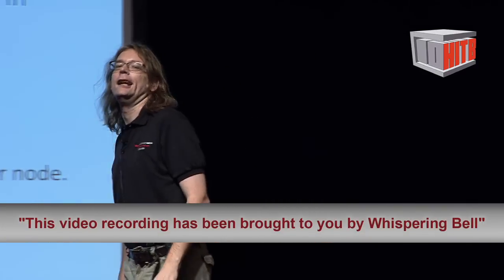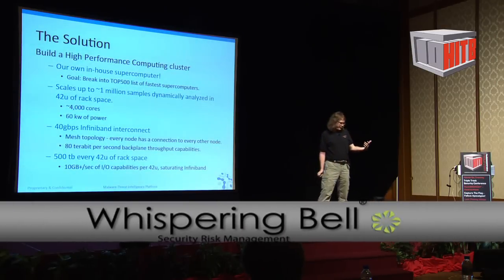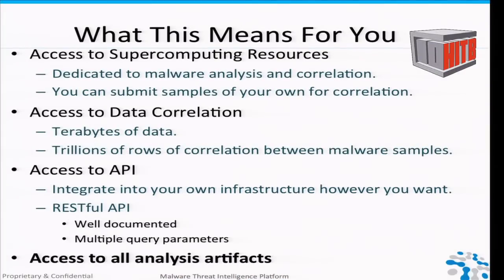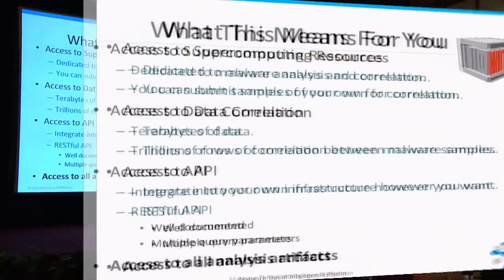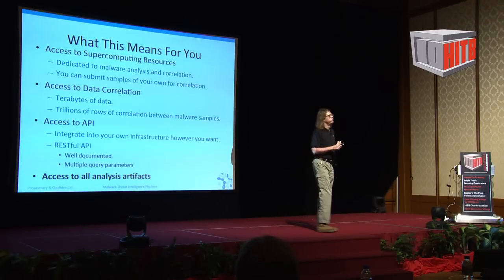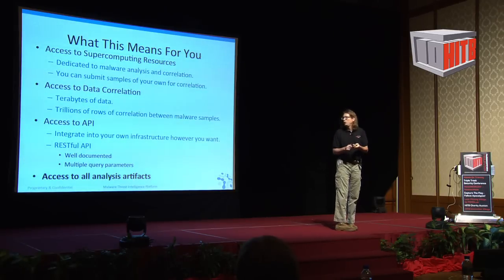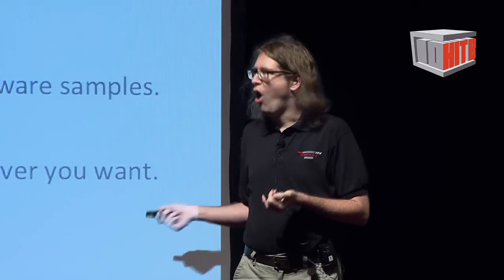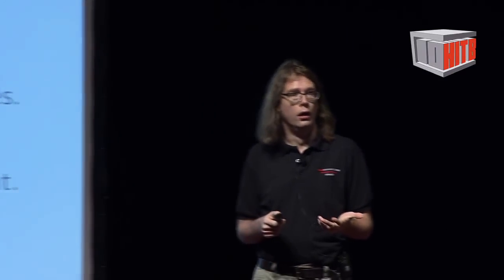We scale up to 4,000 cores in a 42U rack and draw 60 kilowatts of power — the air comes out at 65 degrees Fahrenheit. If you work with us as a partner or customer, you have access to the resources: access to data with 10 bytes of data and trillions of rows, access to an API, and access to every artifact of the sample generator. We store the disk image, the memory dump of the VM, all artifacts changed on disk, and the network stream recording — all of this stored for every single sample we analyze.